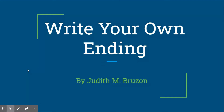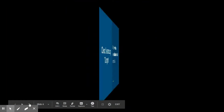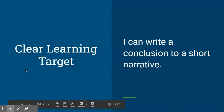Our main objective is that you are able to finish your own story or add your own ending to a story. Our clear learning target is: I can write a conclusion to a short narrative. Let's go ahead and read it together — one, two, three: 'I can write a conclusion to a short narrative.'